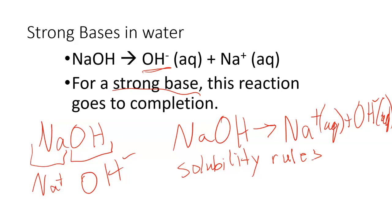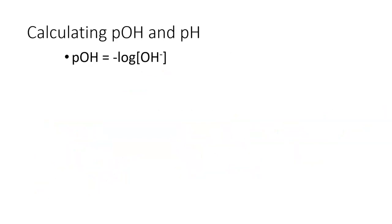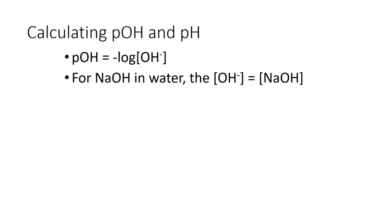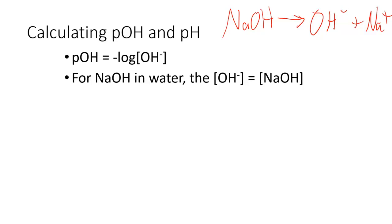Let's look at how we calculate pH and pOH from our strong bases. pOH is the negative log of our hydroxide concentration. For sodium hydroxide in water, the OH⁻ concentration is equal to the NaOH concentration. We can prove that by looking back at our dissociation reaction — the coefficient in front of NaOH is one, and the coefficient in front of hydroxide is also one, so it's a one-to-one relationship. That means for every one sodium hydroxide there's one hydroxide ion.